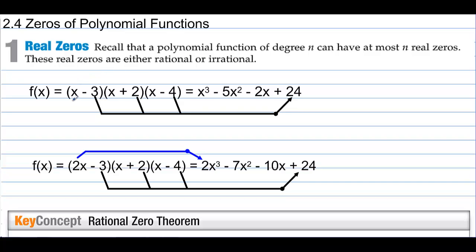Notice we have 1, 2, 3 factors, and when we multiply these three factors, we get this polynomial. Notice specifically that negative 3 times 2 is negative 6, and then negative 6 times negative 4 gives you positive 24, and that's sitting out here on the end.